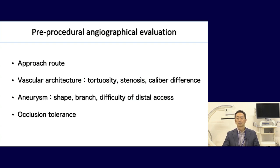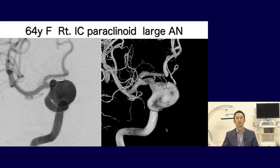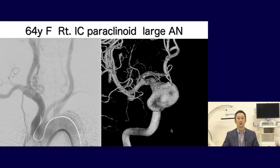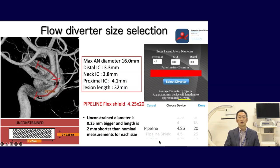Occlusion tolerance is important because we sometimes encounter intraprocedural flow stagnation of the internal carotid artery, and we might have to occlude the parent artery in cases of deployment failure. This case is a 64-year-old female with an IC paraclinoid large aneurysm. The aortic arch is Type 3, which is a big problem because stability of the guiding catheter system is very important for flow diverter deployment. For flow diverter size selection, we evaluate vessel size at three points — distal end, neck, and proximal end. For this patient: distal IC 3.3 mm, neck IC 3.8 mm, proximal IC 4.1 mm.